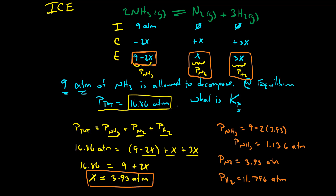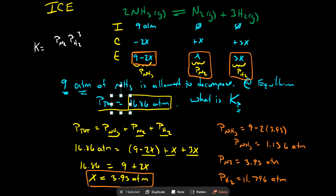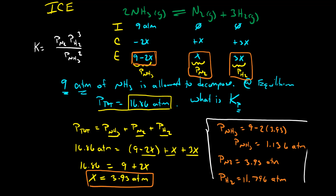The final step is to plug these values into the equilibrium constant expression. Kp equals the pressure of nitrogen times the pressure of hydrogen cubed, divided by the pressure of ammonia squared. Substituting: Kp equals 3.93 times 11.796 cubed, divided by 1.136 squared. This gives Kp equal to 5,000.